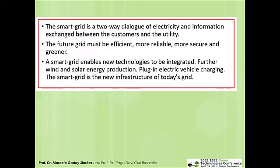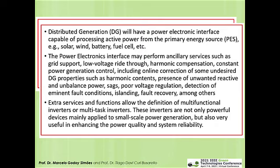The future is what we do now. The smart grid is the new infrastructure of today's grid. Distributed generation (DG) has a power-electronic interface capable of processing active power from the primary energy source — for example, solar, wind, a battery, or a fuel cell. The power grid is evolving by shifting energy supply from large central generation stations to smaller distributed energy resources (DERs). Therefore, power electronics technology is the enabler.